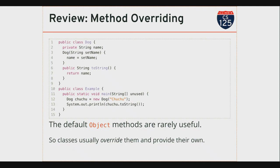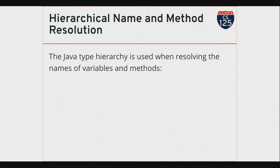So when you design a Java class, you can decide what it means for two instances of your class to be equal — you get to write that method. This hierarchy is used by Java when it tries to find variables and methods to either access or call. So when you use dot notation, you're telling Java to look for a method or a variable with that name, and the way this works is Java starts at the type indicated by the reference that you are using.